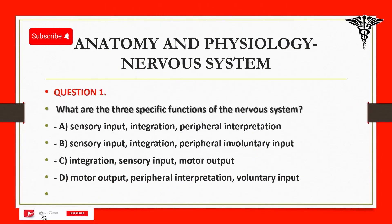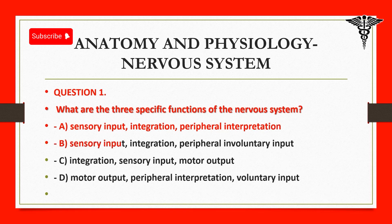Question 1: What are the three specific functions of the nervous system? A. Sensory input, integration, peripheral interpretation. B. Sensory input, integration, peripheral involuntary input. C. Integration, sensory input, motor output. D. Motor output, peripheral interpretation, voluntary input.